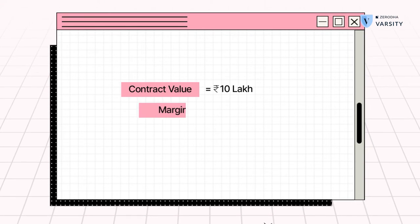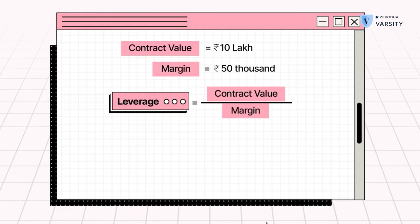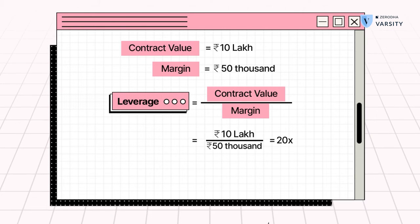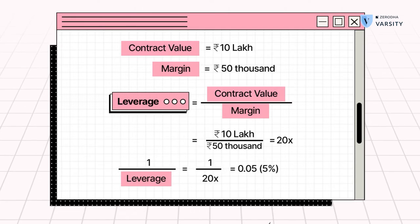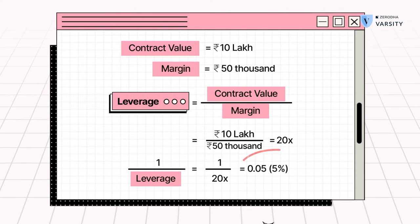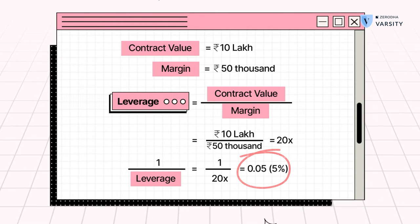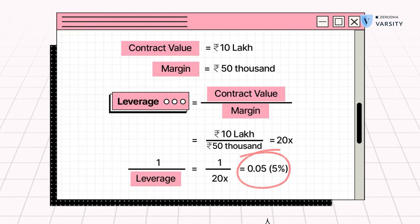But let's make this a little interesting. Suppose the margin was not 1 lakh but 50,000 and the total contract size remained at 10 lakhs. Your leverage now is 20x. This means all the market has to do is go against your position by 5% and your entire initial margin is completely wiped off.